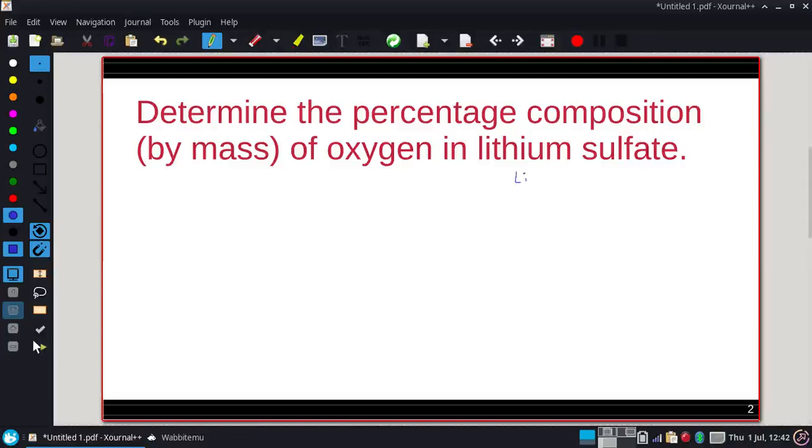We need to figure out the formula of lithium sulfate. I'm starting to write lithium 2 plus. Lithium is just single plus, it's in group 1. Sulfate is SO4 2 minus, so therefore lithium sulfate is Li2SO4 with a 2 for the lithium.